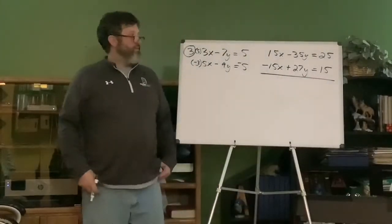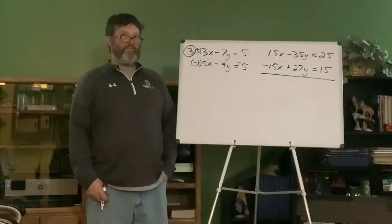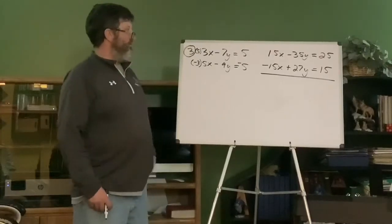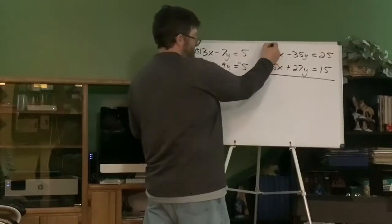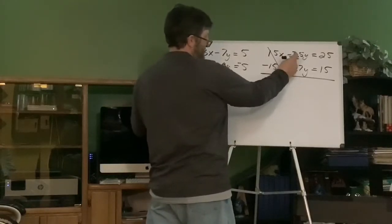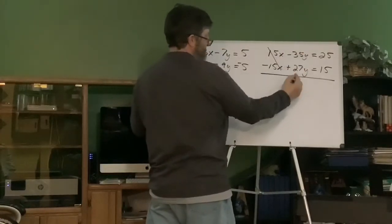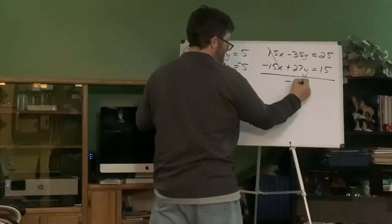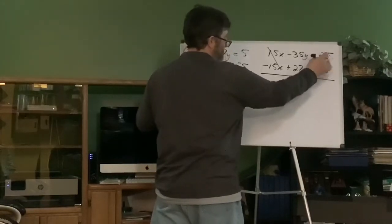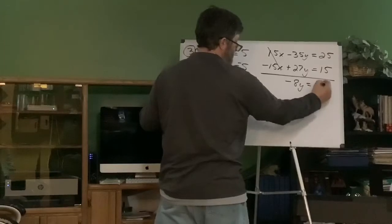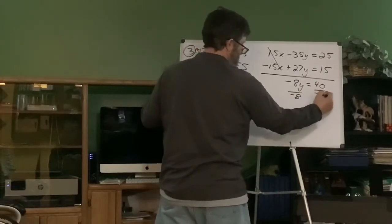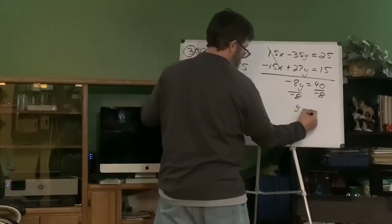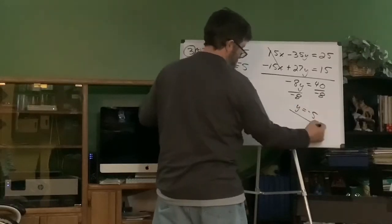Okay. Push pause. Take it from there. Okay. So, hopefully, you added these up. Same coefficient. Opposite signs. Those go away. A negative 35 y and a positive 27, that's going to give you negative 8 y, right? 25 plus 15, 40. Divide by negative 8. Divide by negative 8. Y equals negative 5. Nice.